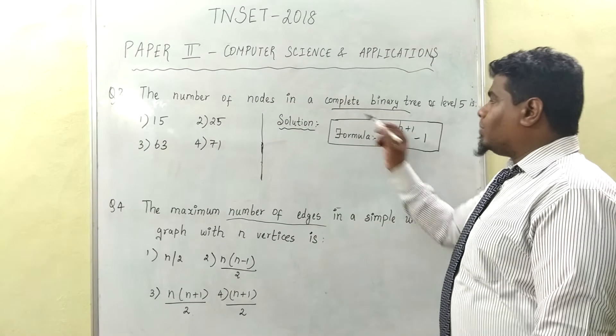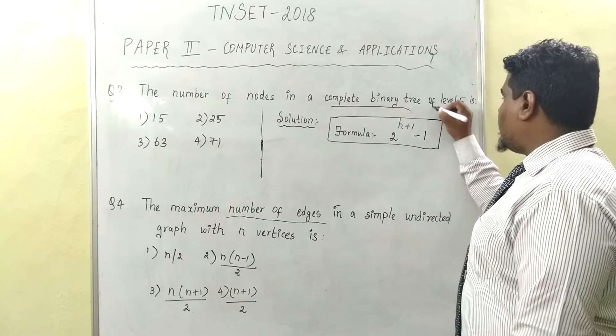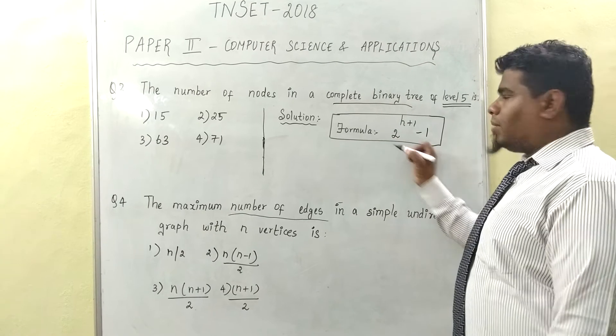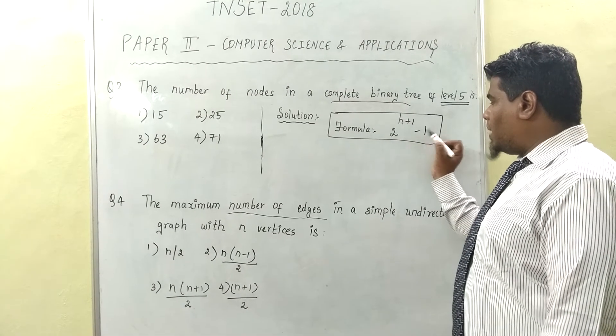Alright. Now, let's see. Complete binary tree of level 5. The formula is 2 power h plus 1 minus 1. H is nothing but level.